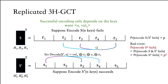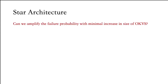The drawback of this construction is that we double the size of the OKVS, and we are looking to be more efficient than that. So our goal is to amplify the failure probability with minimal increase in the size of the OKVS. I will show a simplified version of our construction and then generalize it when presenting concrete parameters later.